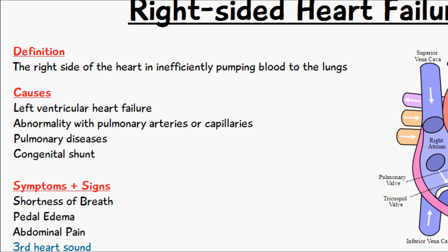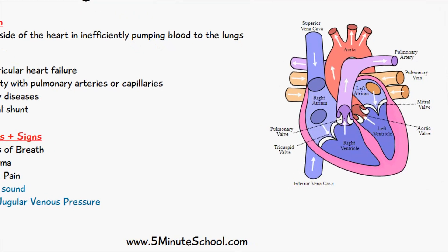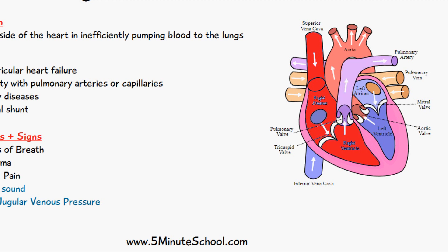One specific reason why right-sided heart failure occurs can actually be due to left-sided heart failure. If there's some kind of problem with the left ventricle and it's not pumping blood to the rest of the body properly, there's a backlog of blood for the right ventricle. Blood flows from the right ventricle into the pulmonary circulation and back into the left side, so if the left side isn't pumping efficiently, there is increased pressure on the right side — this is known as increasing the afterload for the right ventricle.